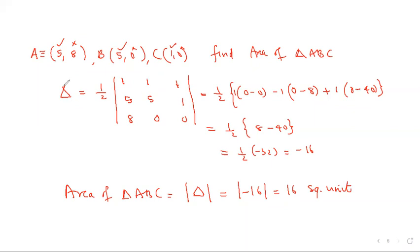Area of triangle = |Delta| = |−16| = 16 square units. The modulus is used because area cannot be negative — whatever answer you get from the formula, take the modulus and write the answer.